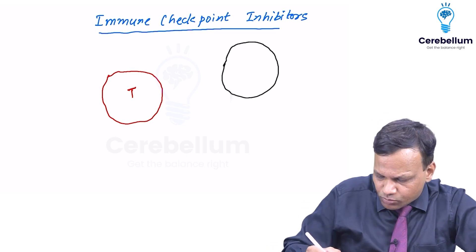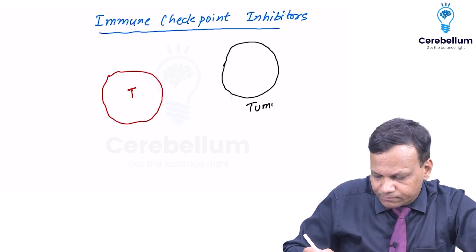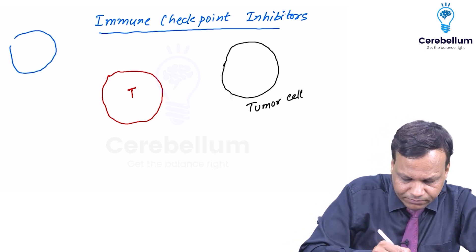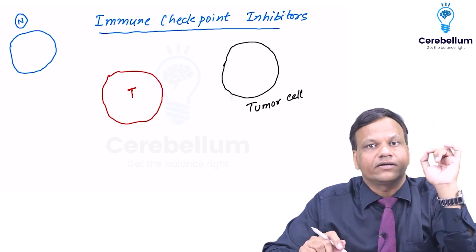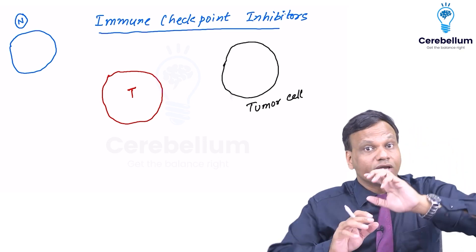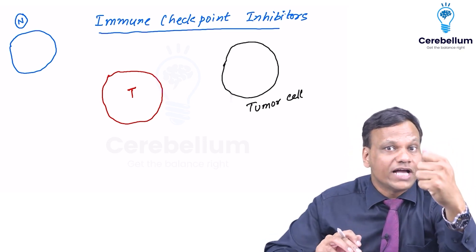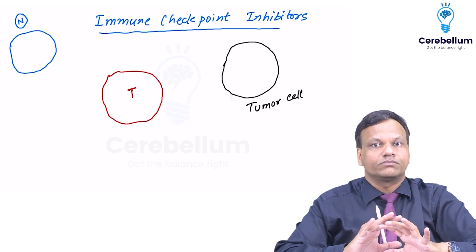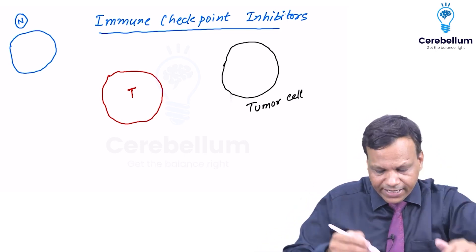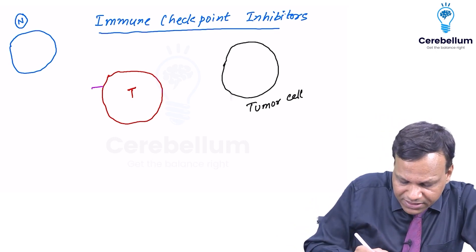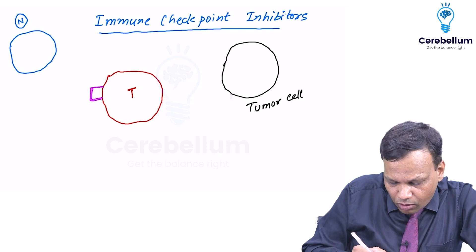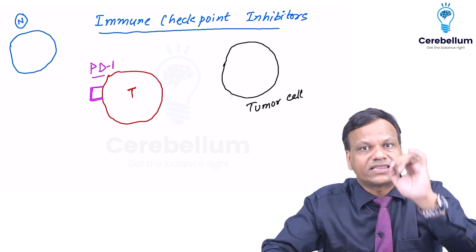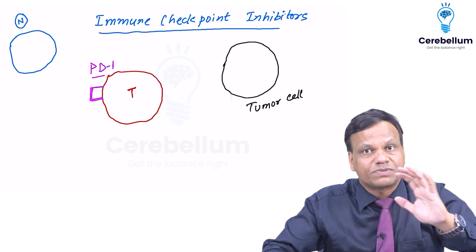What is the difference? A normal cell has been given an ID card. Whenever the T cell tries to kill a normal cell, the normal cell will show the ID — 'I am part of your body, please don't kill me' — so the T cell will stop. But tumor cells do not have that ID. On the T cell there is a receptor called the programmed death receptor, known as PD-1, which is present on T cells.